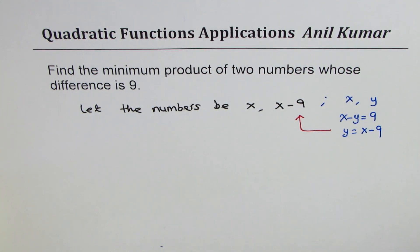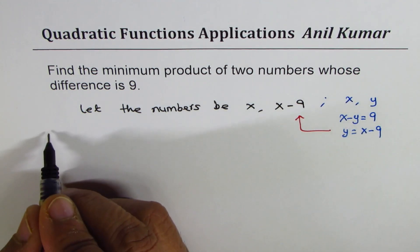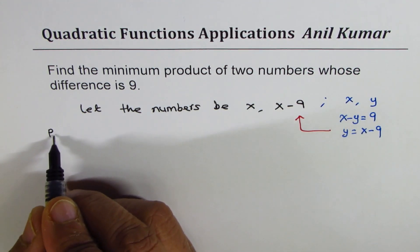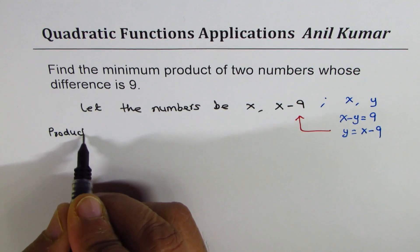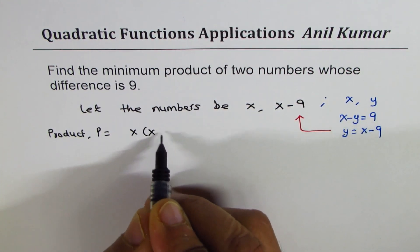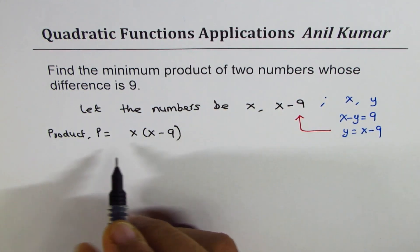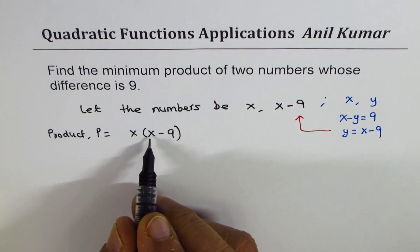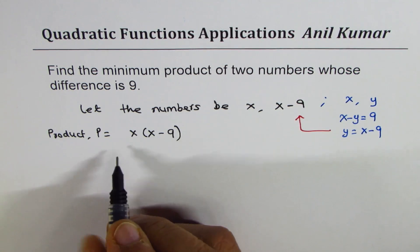Their product, so product let's say P or we can write product P equals to X times X minus 9. So we get product as X times X minus 9.